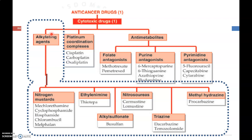In this Part 2 video on anti-cancer drugs, we start with the first classification of cytotoxic drugs: alkylating agents. In Part 1, we discussed the definition, classification, and toxicity of different cytotoxic drugs, and the general mechanism of action of anti-cancer drugs. Let's now begin with alkylating agents, which include nitrogen mustards, ethylamine, nitrosoureas, methyl hydrazine, triazines, and alkane sulfonates.